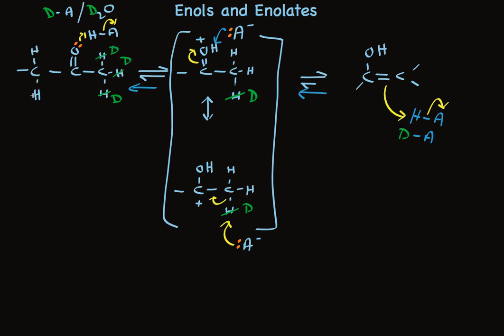So eventually, all of the alpha protons are exchanged for deuterium. And of course, the same thing is true for alpha protons on the other side. And so again, we can summarize by saying, carbonyl compounds with alpha protons can be treated with labeled acid and labeled solvent to exchange all the alpha hydrogens.